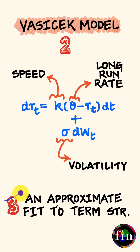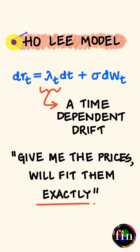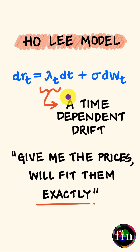And therefore, when we come to step 3, the fit to the observed term structure of interest rates is rather approximate. Compare this to a no-arbitrage model such as the Ho-Lee model. In this model, its specification includes a time-dependent drift, which gives this model ample flexibility to exactly match the term structure of interest rates, and therefore this kind of model is better suited for the purpose of pricing and hedging interest rate derivatives.